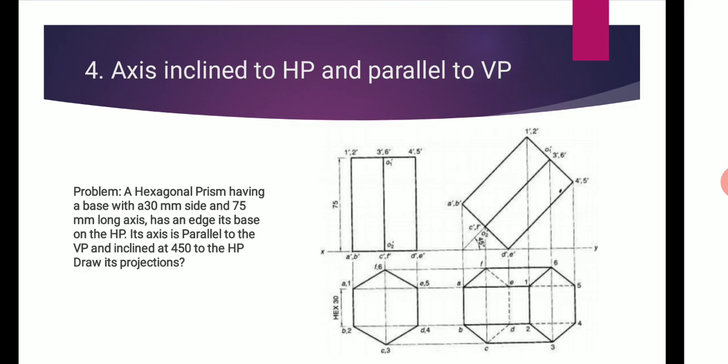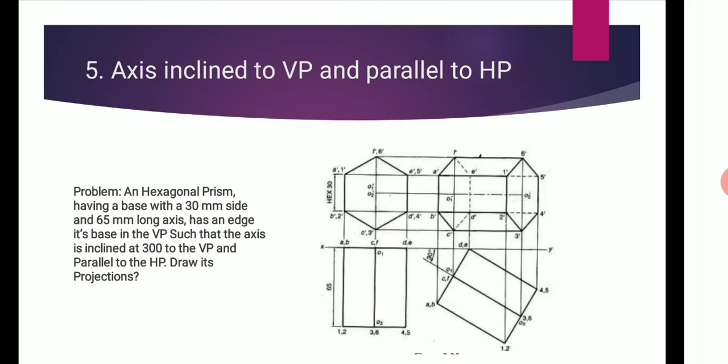Then axis inclined to HP and parallel to VP. First we have to draw the object in HP and then tilt it according to the parallel to VP. The fifth one is axis inclined to VP and parallel to HP. It is vice versa.